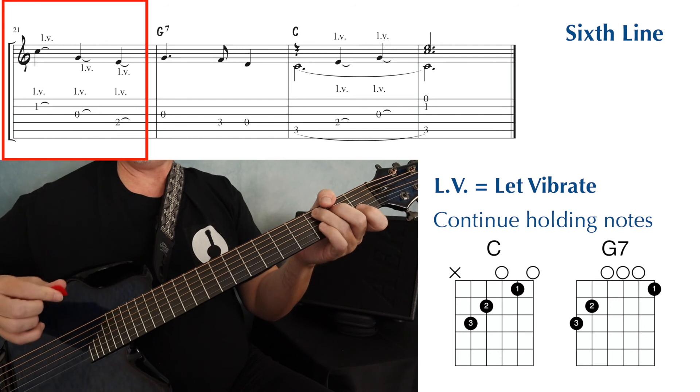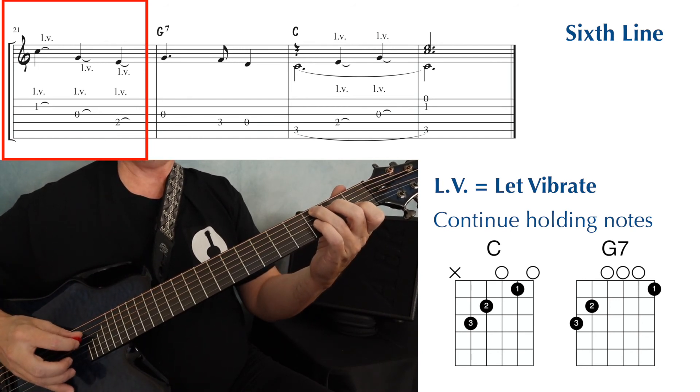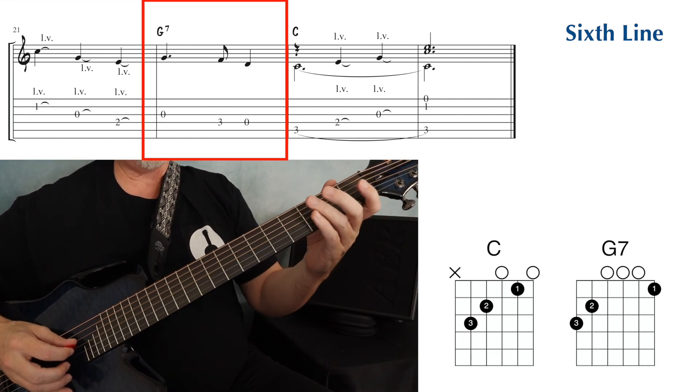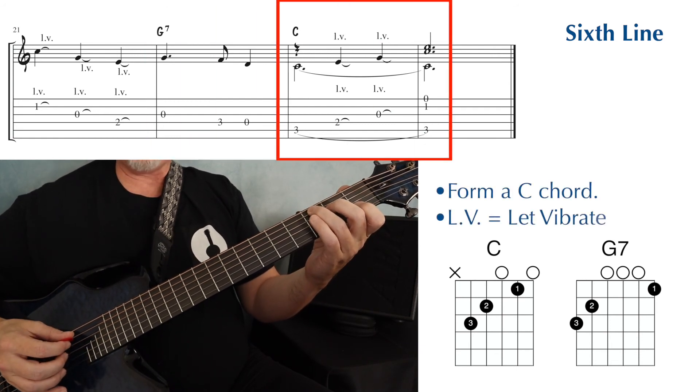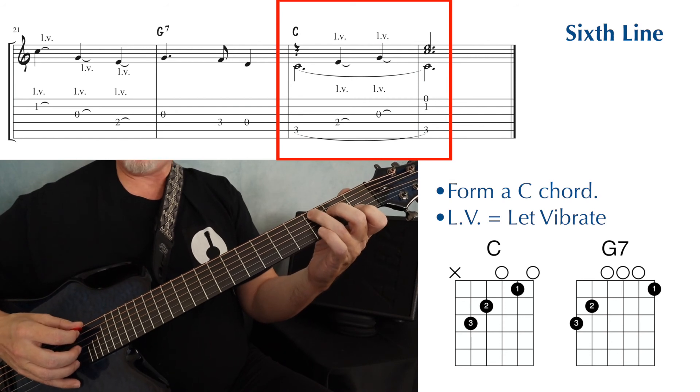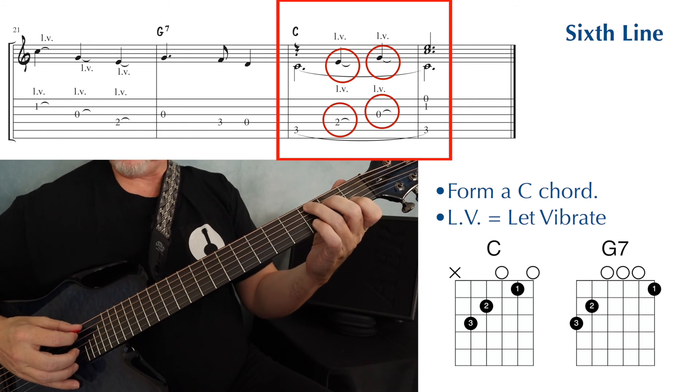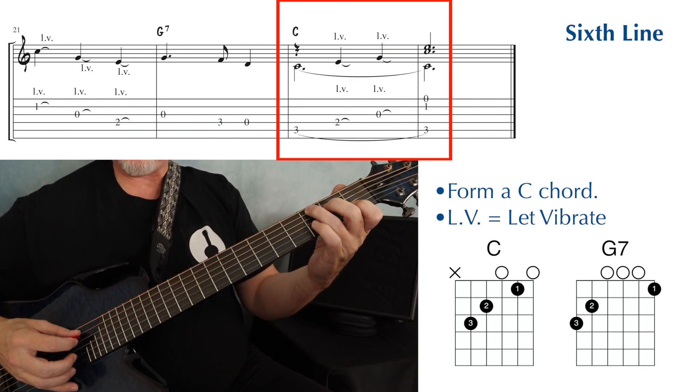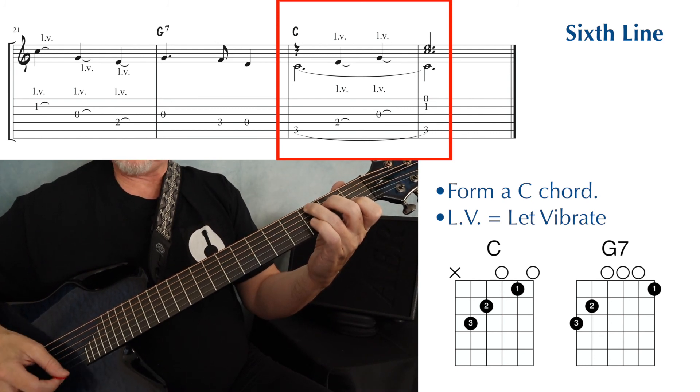And I find that pretty easy to play if I just only do up strokes with a pick, up, up, up. Then we have some single notes, and then at the end, we've got another C chord, so I'm just going to hold down the full C chord, even though at the beginning, I'm just playing that one low C, third fret, fifth string. And we have those L, Vs and the little ties again, which just means we're going to be ringing all throughout. And then a little double stop at the end.